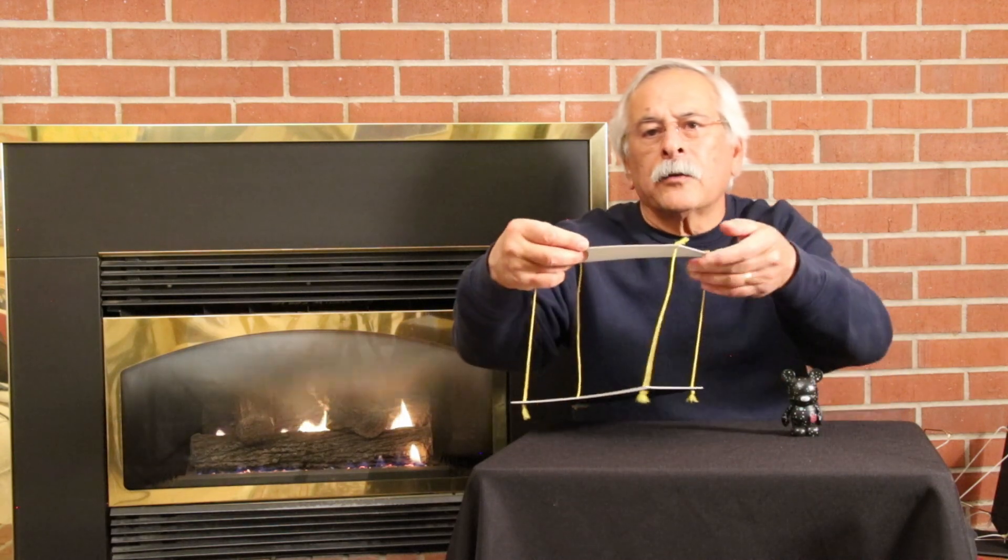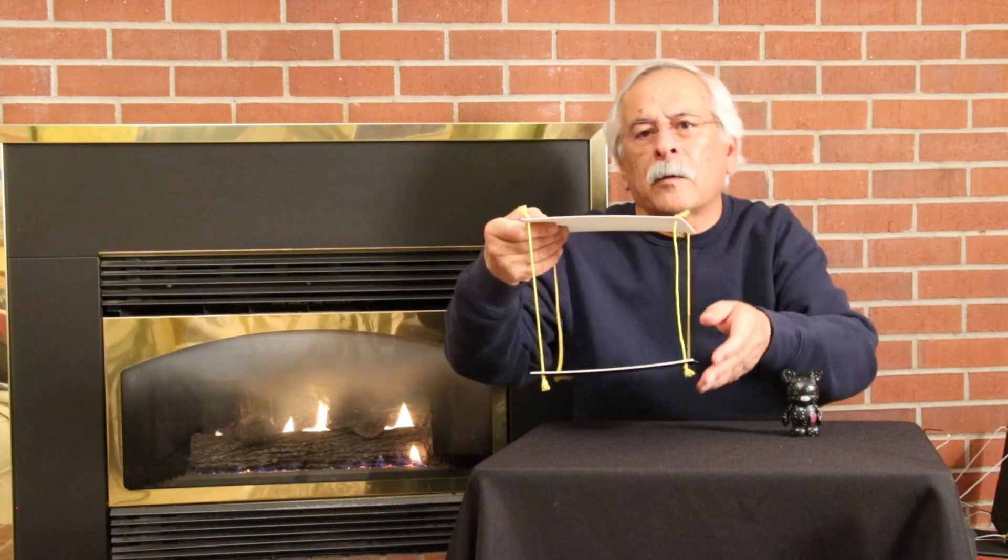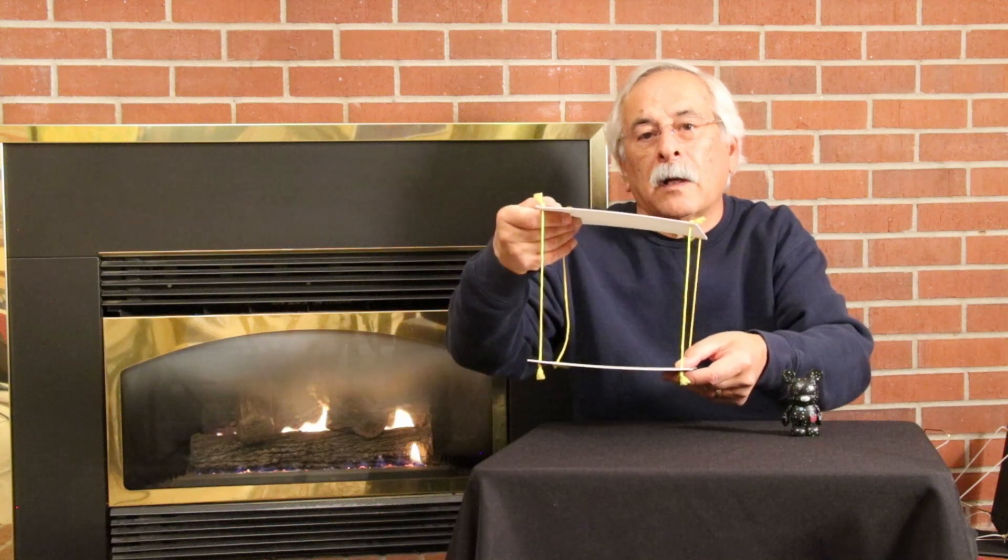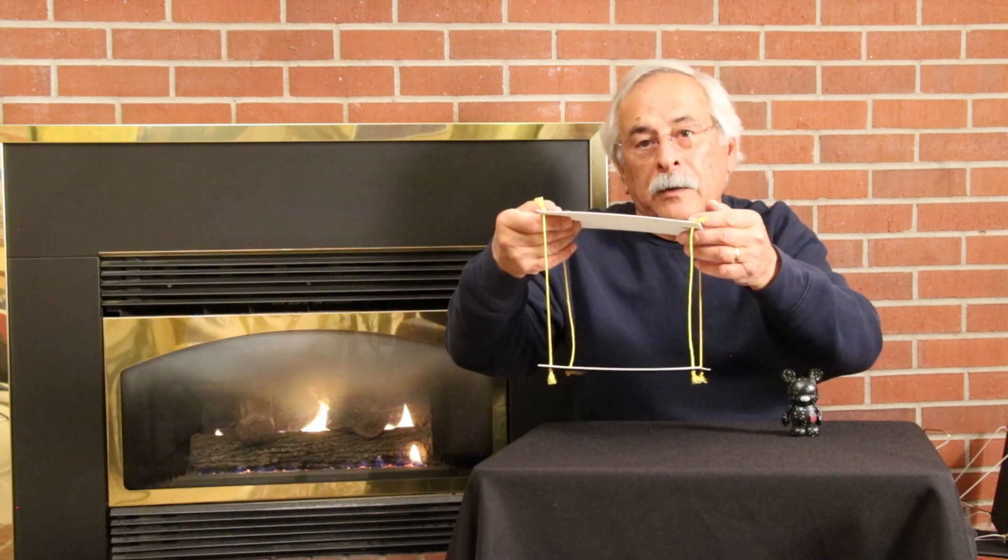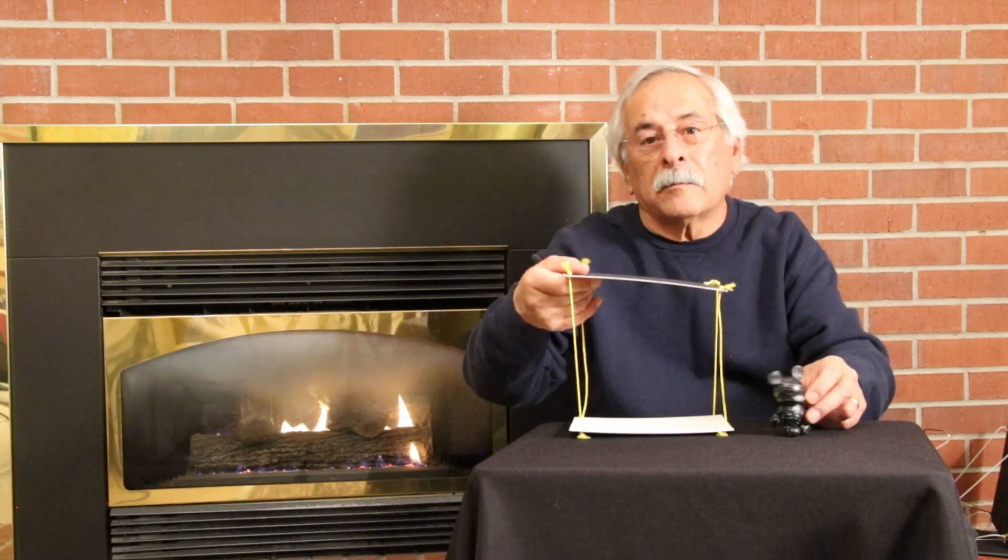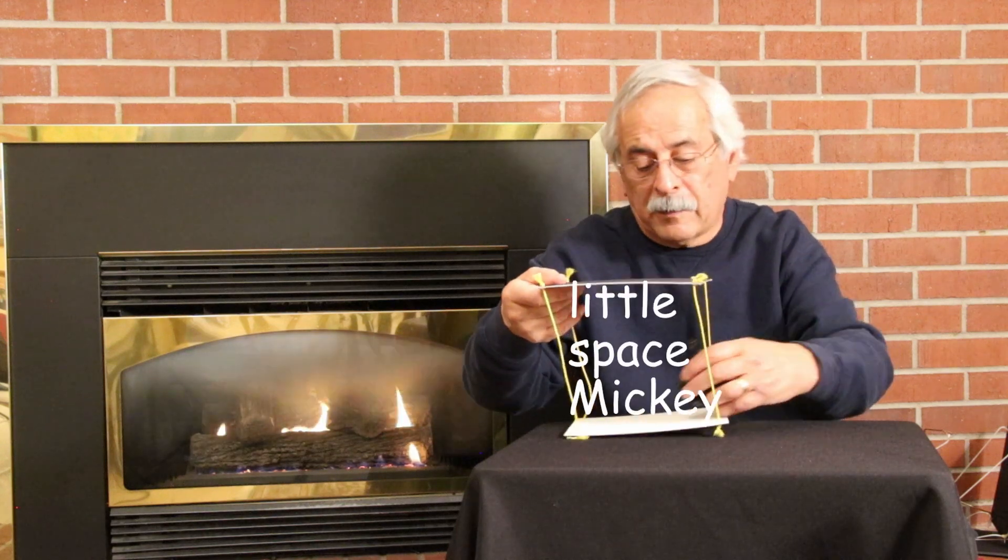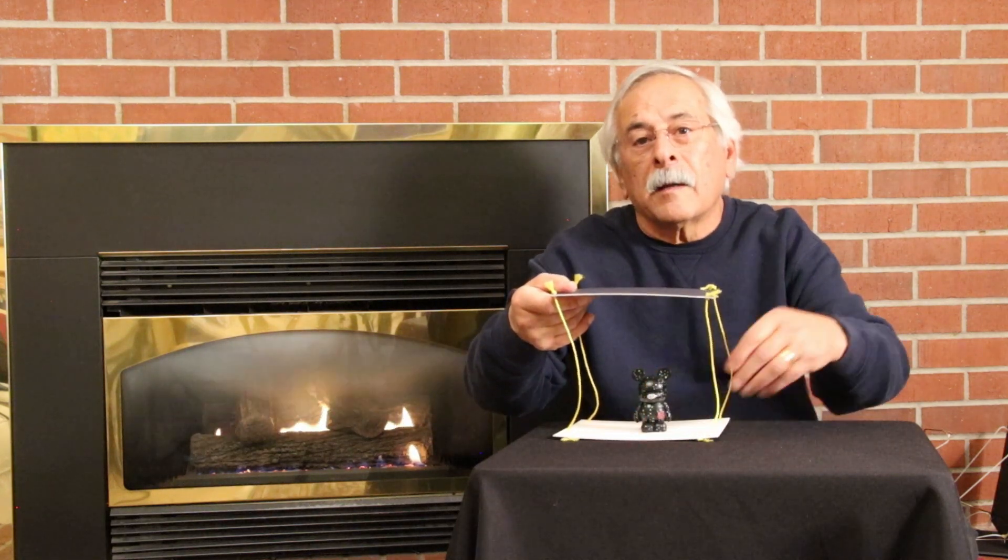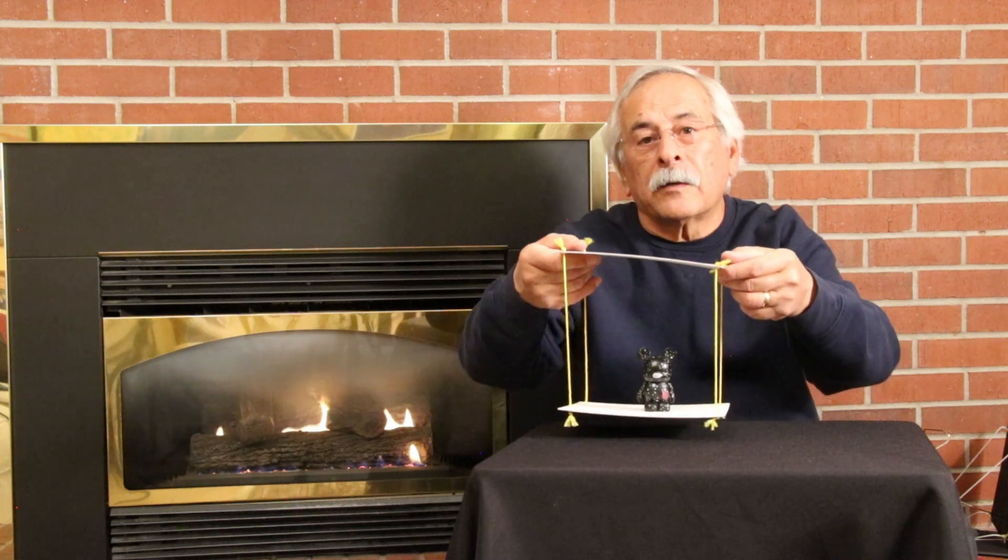Look, I can use string to support the bottom platform of this table if I hold on to the top platform securely. I will place this figurine on the bottom, my little Mickey, my little space Mickey, because the string is strong enough to take the tension.